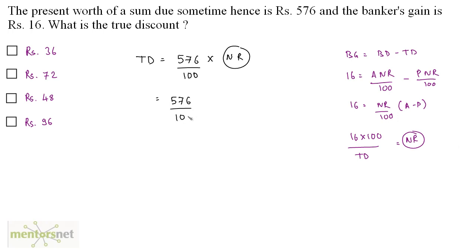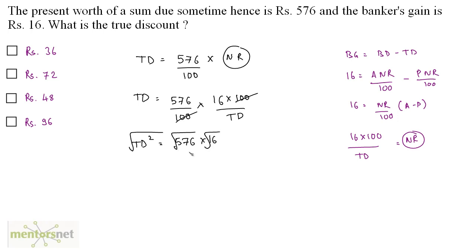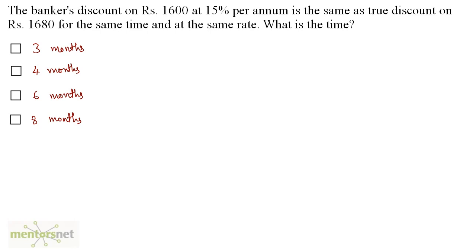Now substituting: true discount equals 576 upon 100 times N·R, and N·R equals 1600 divided by true discount. The 100s cancel, giving true discount squared equals 576 times 16. Taking the square root: true discount equals √576 × √16 = 24 × 4 = 96 rupees.